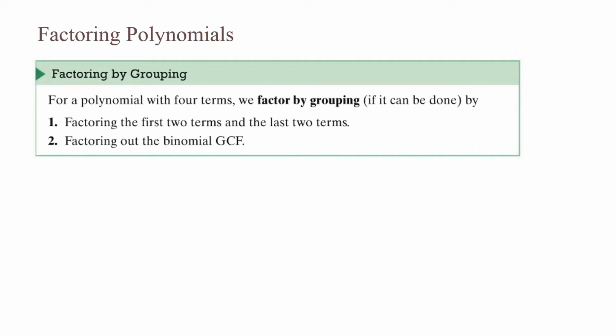Factoring polynomials — factoring by grouping. For a polynomial with four terms, we factor by grouping if it can be done by: first, factoring the first two terms and the last two terms, and second, factoring out the binomial GCF.